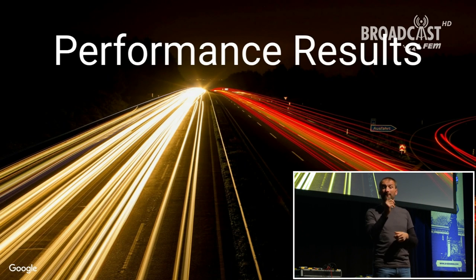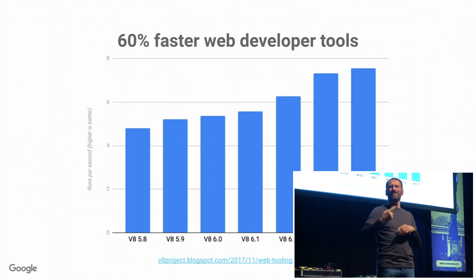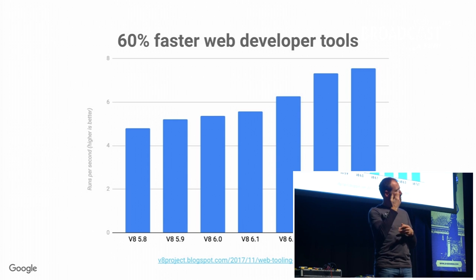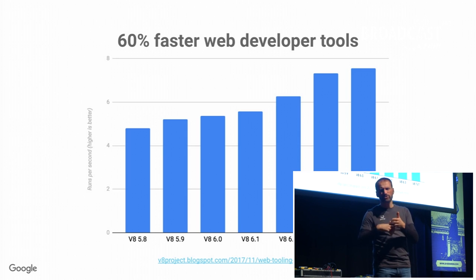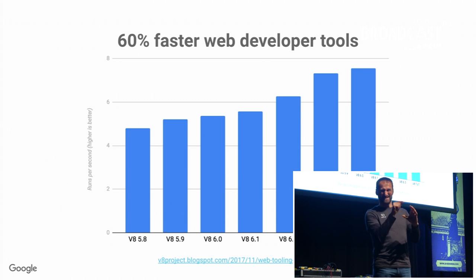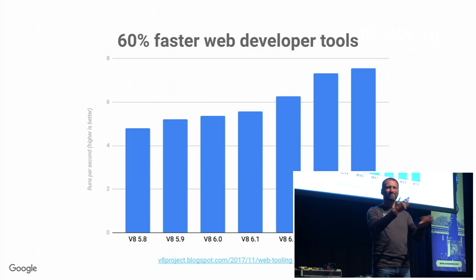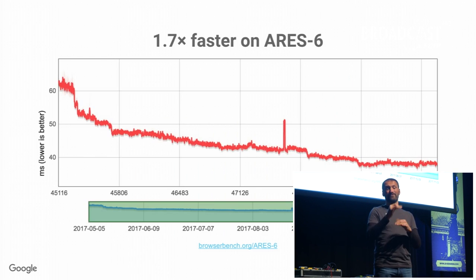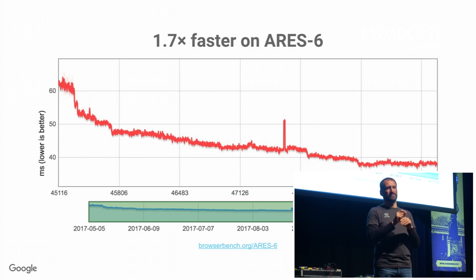So where are we now with respect to TurboFan performance? We released a benchmark two weeks ago containing popular tools you're probably running as part of your job — like Babel, parts of Webpack, TypeScript, Uglify.js — all the things you run to build a website. We've been focusing on making this workload better. Since we shipped TurboFan, we improved by 60% already — which means saving 60% of your developer time when you upgrade to a recent version of Node. Another very important use case is ES6 performance as measured by the ARES-6 benchmark, and we improved since May this year by 1.7x, which is quite remarkable.